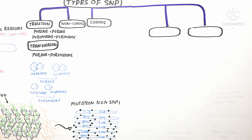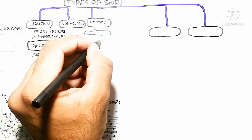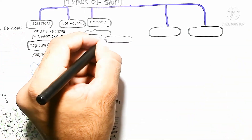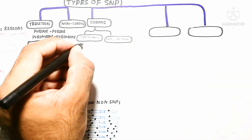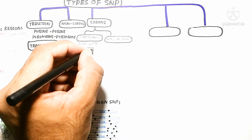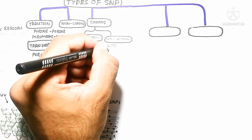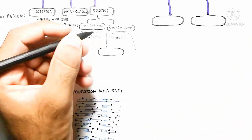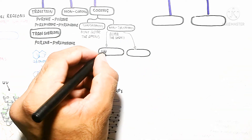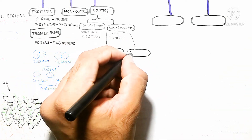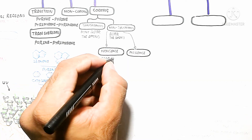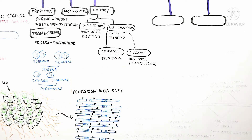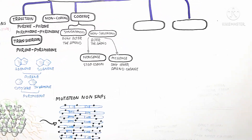Non-coding SNPs are not used for coding or protein translation. Coding SNPs are classified as synonymous or non-synonymous. Synonymous SNPs do not alter the amino acid — changes occur but amino acid alteration is impossible. Non-synonymous SNPs can alter the amino acid and are further divided into nonsense and missense. Nonsense mutations introduce a stop codon such as UGA, while missense mutations change the amino acid identity.